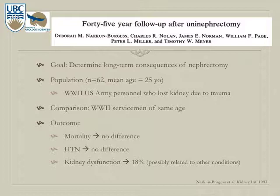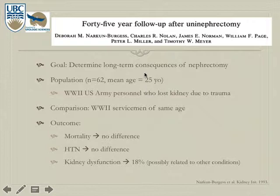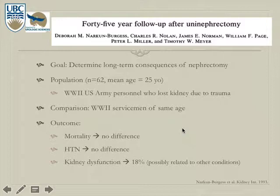One frequently cited study is a 1993 paper reporting 45-year follow-up after uninephrectomy. It included 62 men with a mean age of 25 — World War II army personnel who lost a kidney due to trauma, a population analogous to healthy kidney donors. Compared to servicemen of the same age, there was no long-term difference in mortality or hypertension. There was an 18% increased risk of kidney dysfunction, but subsequent analysis suggested this was likely due to other conditions rather than uninephrectomy itself.